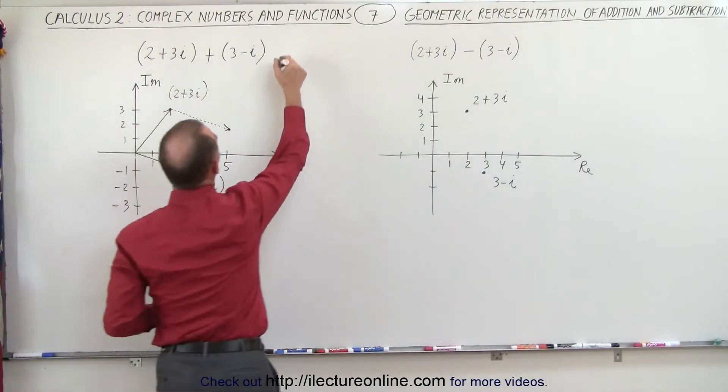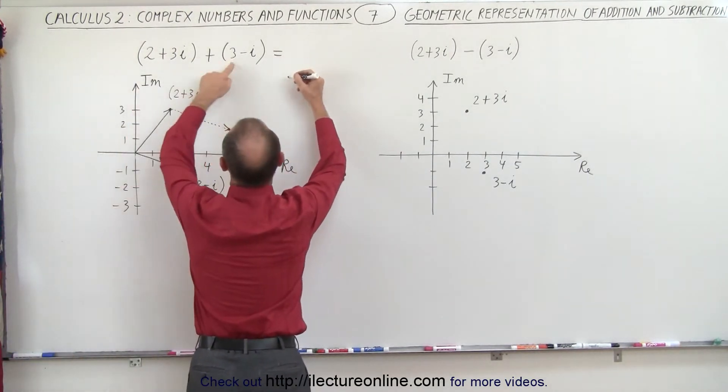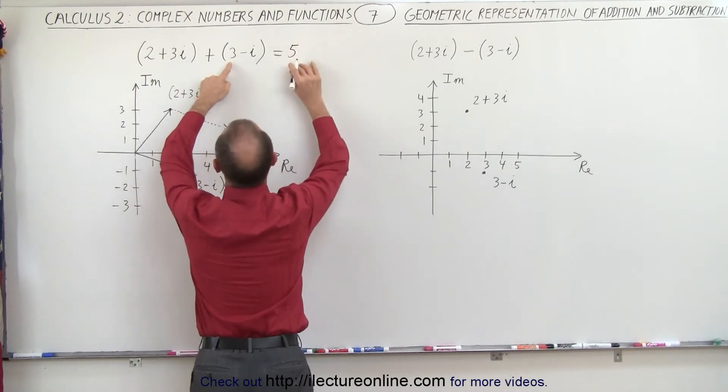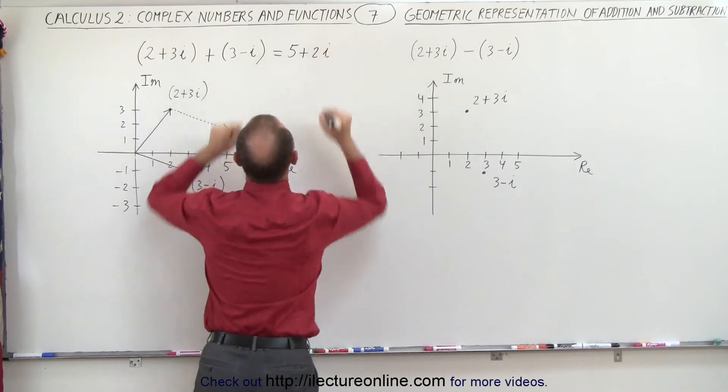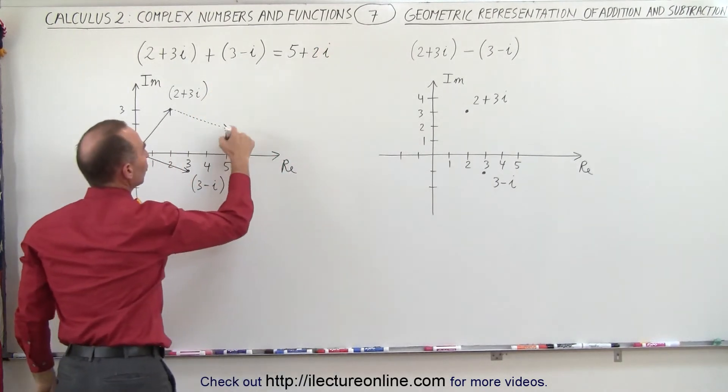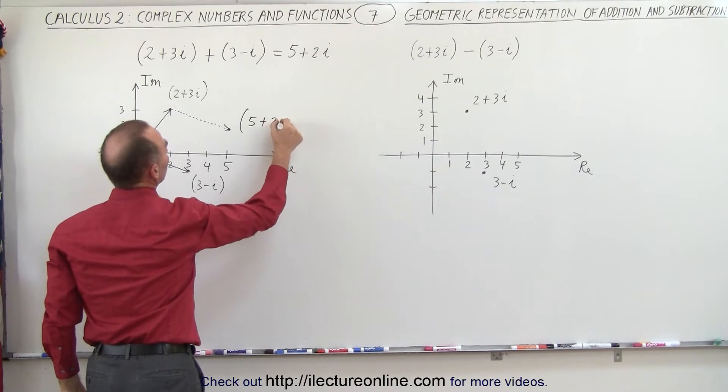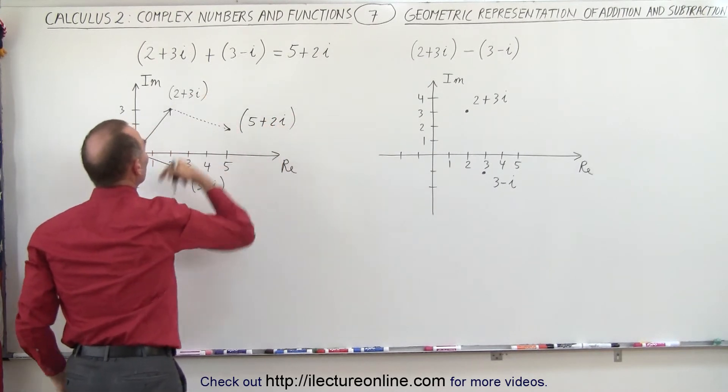So when we add this, we get the following. We get 2 plus 3, which is 5, that's the real part, and 3i minus i, that's plus 2i, which is the imaginary part. Now notice this should be the solution, so we get 5 plus 2i, that's the sum of these two.